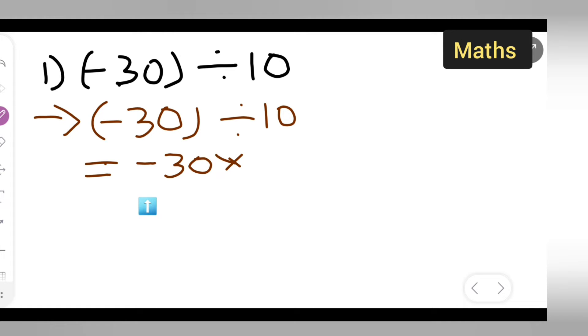How to divide this negative 30 divided by 10? Just take the reciprocal of this. Multiply and then take the reciprocal of this, 1 upon 10.